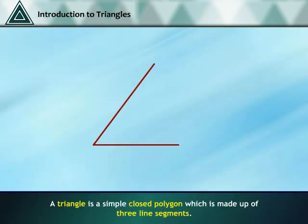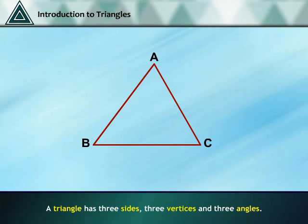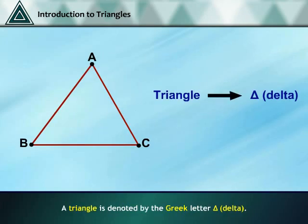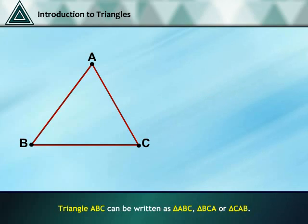A triangle is a simple closed polygon which is made up of three line segments. A triangle has three sides, three vertices and three angles. A triangle is denoted by the Greek letter delta. Triangle ABC can be written as triangle ABC, triangle BCA or triangle CAB.